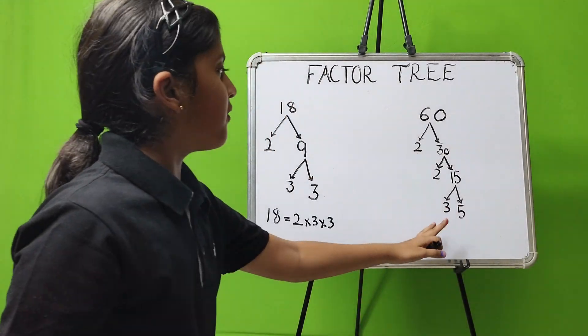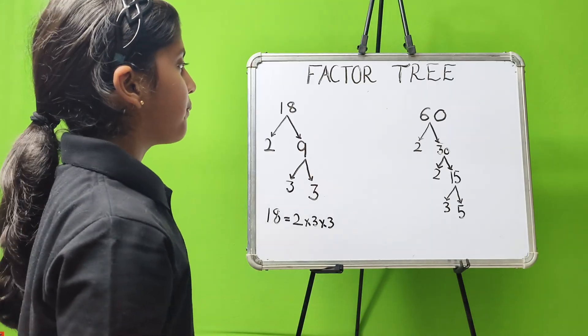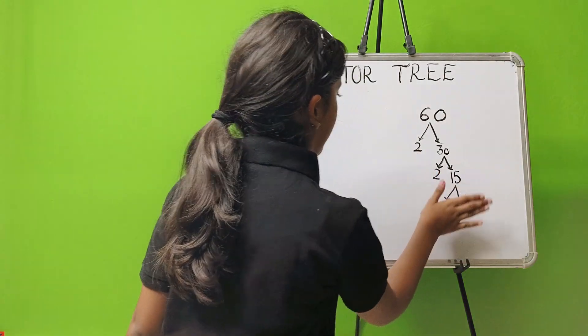Now, 3 and 5 are prime numbers. So our factor tree ends here.